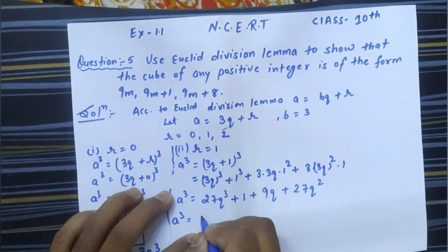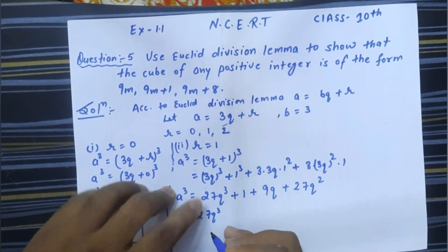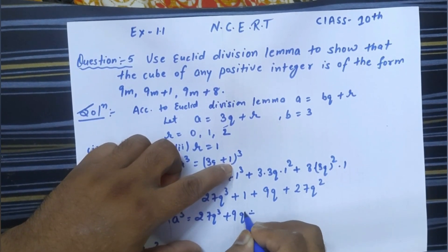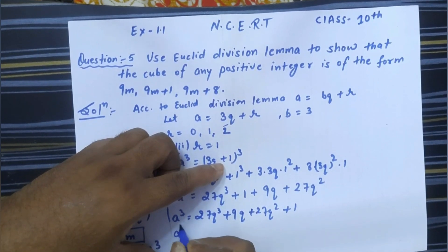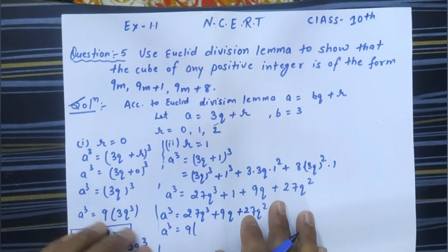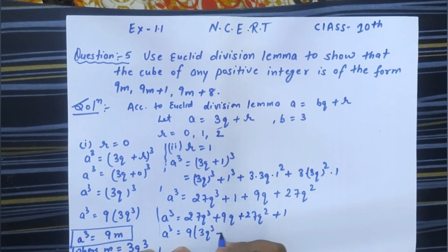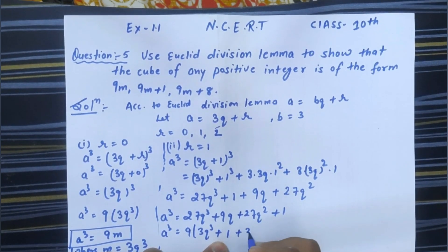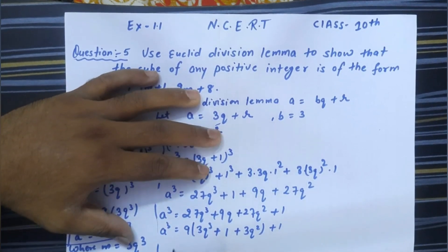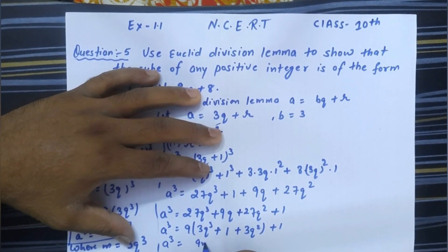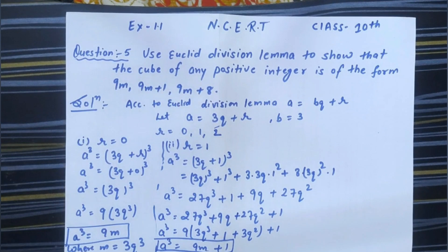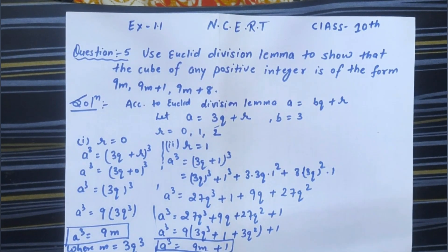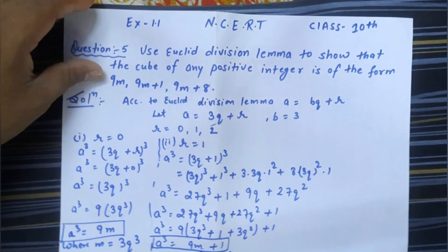Rearranging and taking 9 common from all terms except 1: a³ = 9(3q³ + 3q² + q) + 1. So a³ is of the form 9m + 1, where m = 3q³ + 3q² + q. This is clear up to here — no doubt I hope.